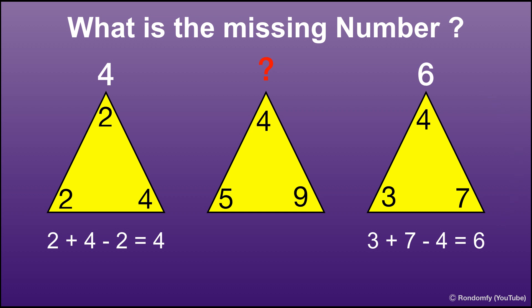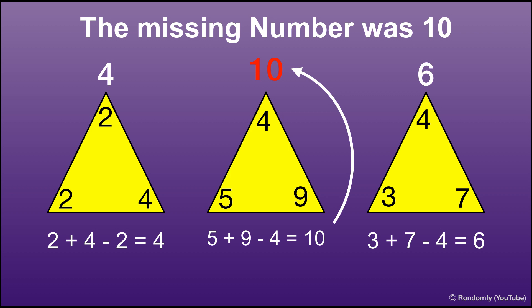Similarly, for the middle triangle, 5 plus 9 minus 4 equals 10. So the missing number was 10.